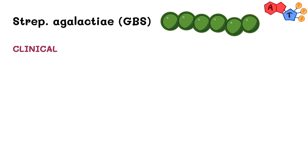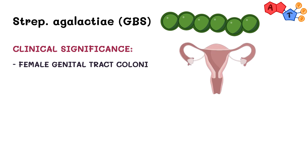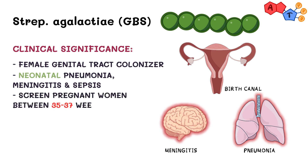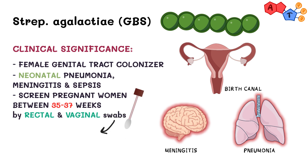Now for the clinical correlation — it's really simple to remember. Streptococcus agalactiae can colonize the genital tract of females, so most of the diseases it causes are related to babies, because that's when the newborn passes through the birth canal. This includes pneumonia, meningitis, and sepsis. For that reason, it's recommended to screen pregnant women between 35 and 37 weeks of gestation by rectal and vaginal swabs. If positive, these patients should receive intrapartum antibiotic prophylaxis, usually ampicillin or penicillin.